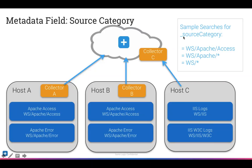Check this out: if I search where source category equals 'WS Apache Access,' that lets me search across host A and host B without having to specify each host individually. If I use 'WS Apache Star,' I look at Apache Access and Apache Error across both hosts. Or 'WS Star' lets me look through all hosts for anything that is a web server, regardless of whether it's IIS or Apache. This naming convention is robust and allows you to easily define your search scope.